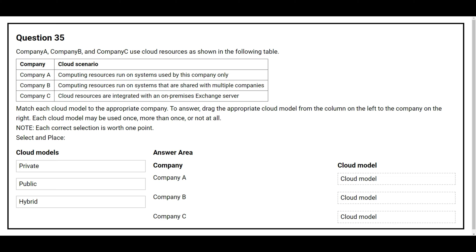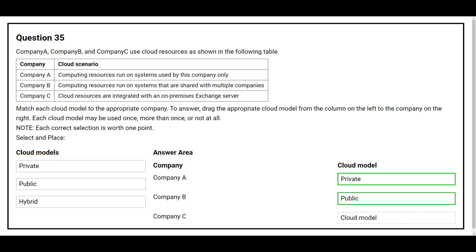On the left side you have the cloud models, on the right side you have the company. The first company is Company A — the correct cloud model is private. The second company is Company B — the correct cloud model is public. The third company is Company C — the correct cloud model is hybrid.